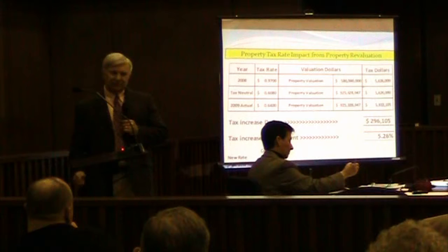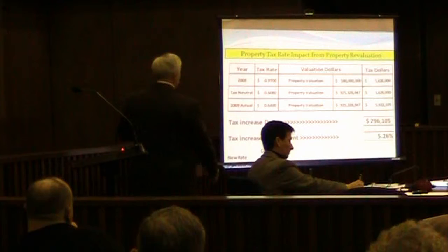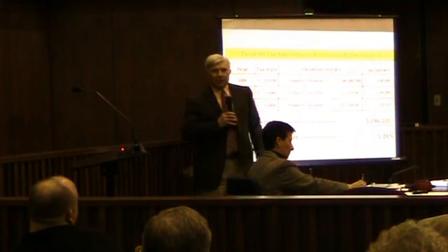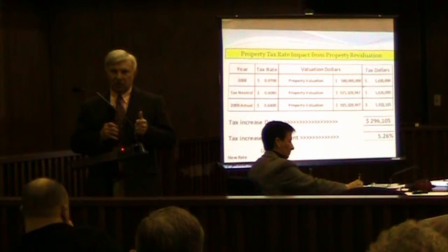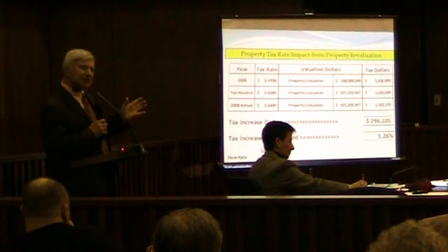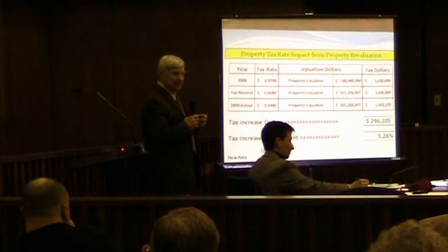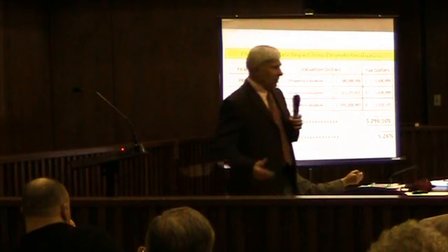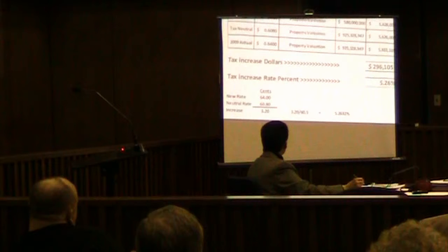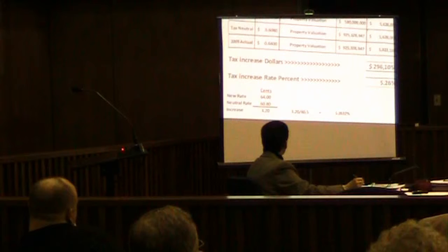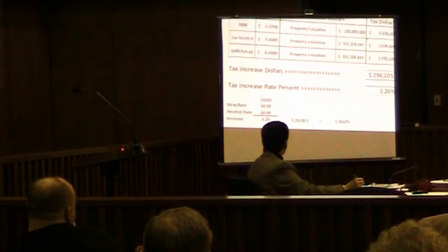What did we do? We went to $0.64. Property stays the same but it generates more money — $296,000 more. That's a 5.26% tax increase — the largest tax increase ever in our history, period. This is good for one thing, but not for others; it depends on how you want to approach it as a taxpayer. You take $0.64 minus $0.608, you come up with a 3.2 cent increase, divide it by $0.608, and you get 5.26%.